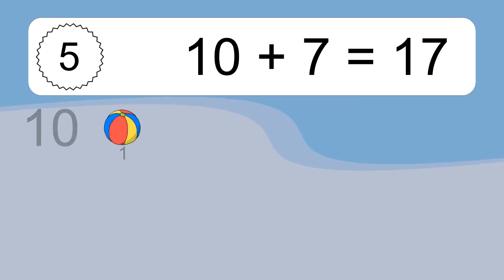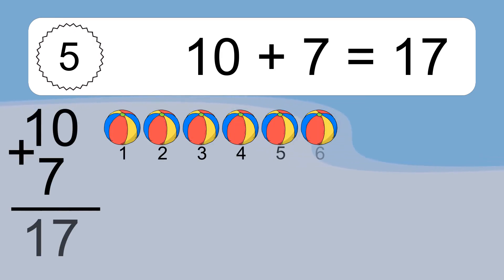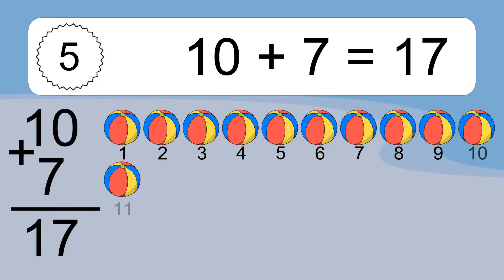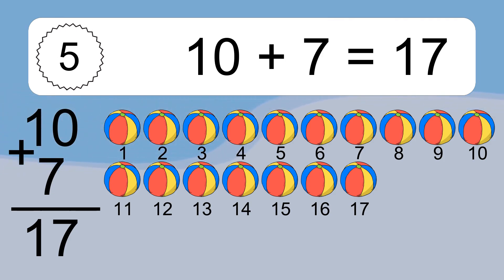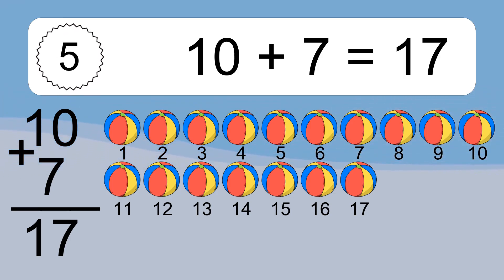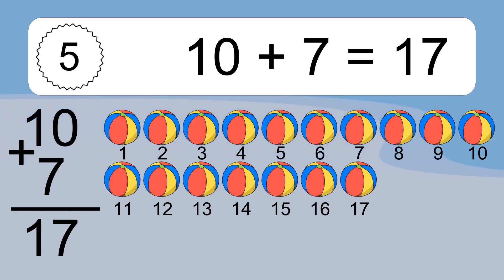10 plus 7 equals what? 10 plus 7 equals 17. Let's count it: 1, 2, 3, 4, 5, 6, 7, 8, 9, 10, 11, 12, 13, 14, 15, 16, 17.